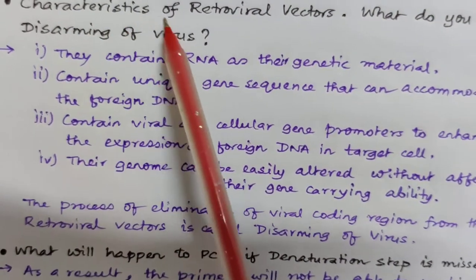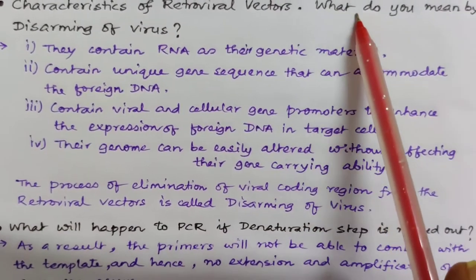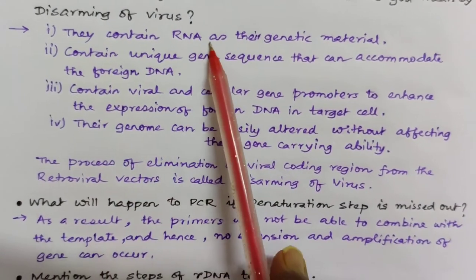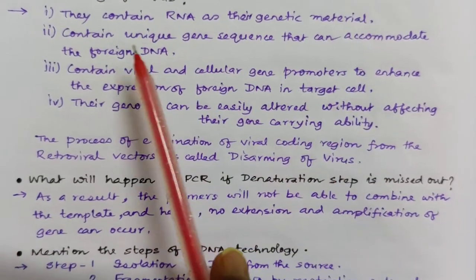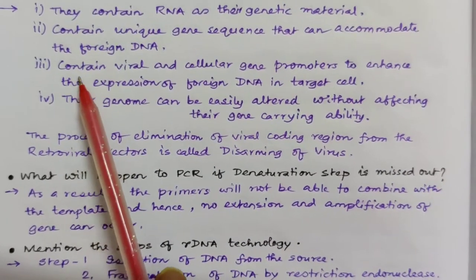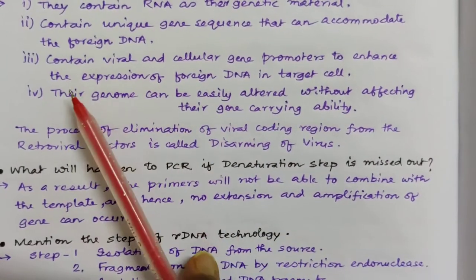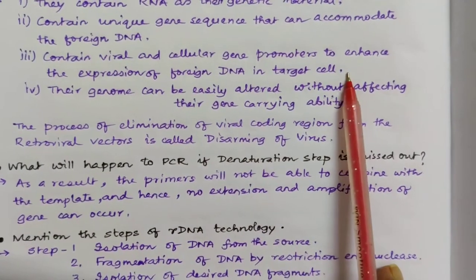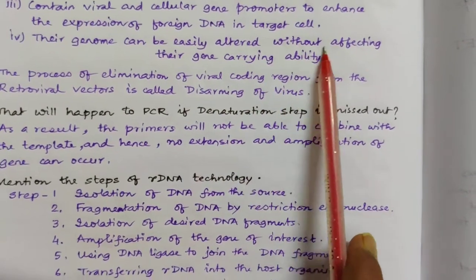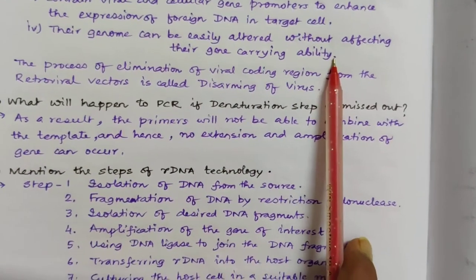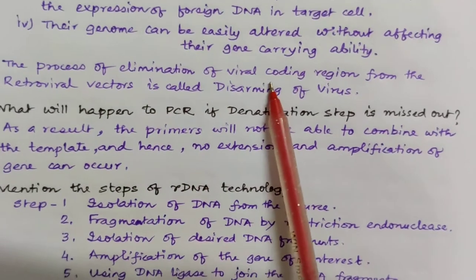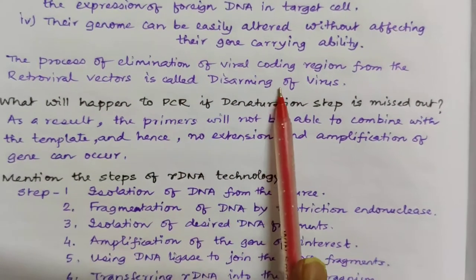What are the characteristics of retroviral vectors, and what is meant by disarming of viruses? Retroviral vectors contain RNA as their genetic material; they contain unique gene sequences that can accommodate foreign DNA; they contain viral and cellular gene promoters to enhance expression of foreign DNA in target cells; and their entire genome can be easily altered without affecting gene-carrying ability. The process of eliminating the viral coding region from retroviral vectors is called disarming of viruses.